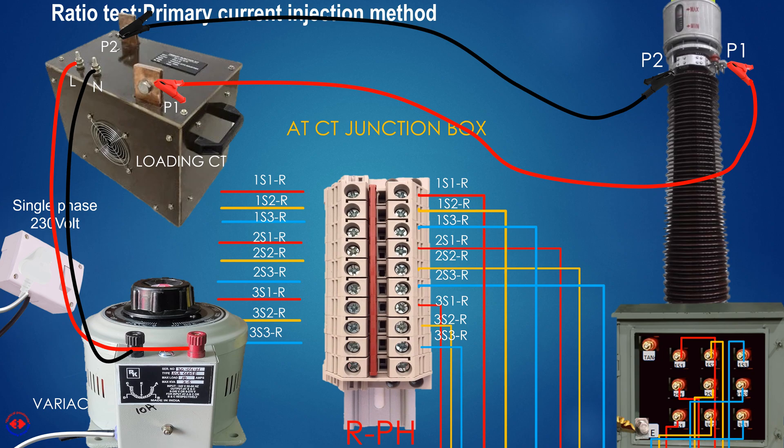Now, we will take output currents from the secondary terminal box or at CTJB. We can test on any of the three cores available in the terminal box or CTJB. Then output will be from terminal 1 to terminal 3 or terminal 1 to terminal 2. We will now short 1s1 and 1s3 to get output.